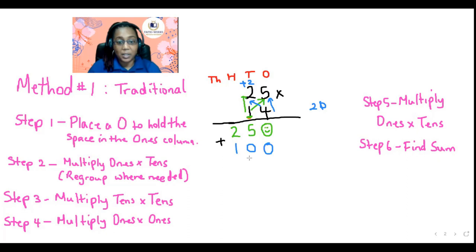Step number six, all we have to do now is find the sum. So we add 250 plus 100. So let's add in the ones column moving to the left. So 0 plus 0 is 0, 5 plus 0 is 5, 2 plus 1 is 3. And there you have it, 350. Now let's see if we use another method if we will get the same results. So let's hop on over to the next slide.